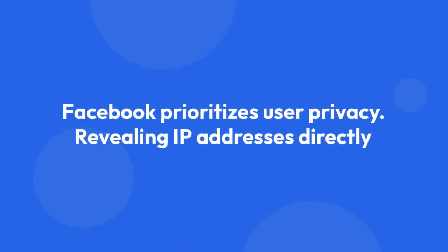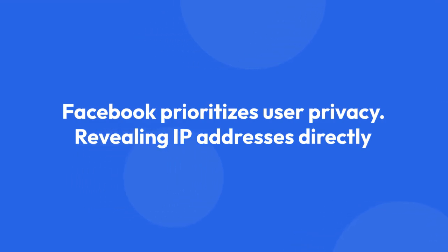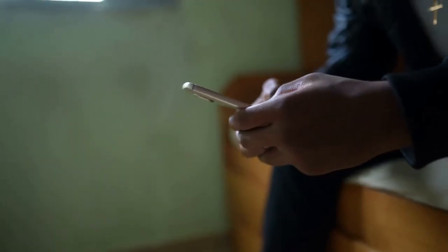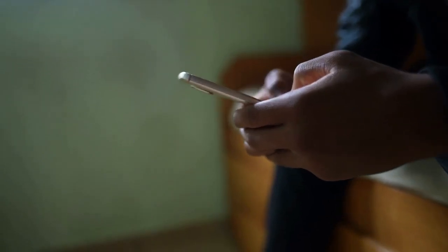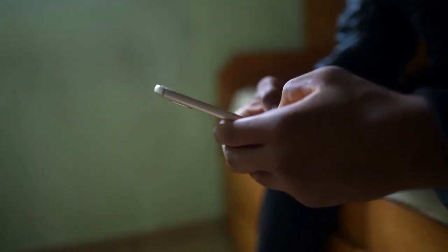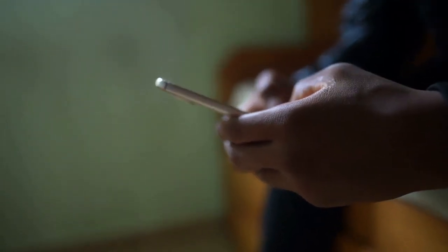Facebook prioritizes user privacy. Revealing IP addresses directly would be a massive security breach and a violation of their terms of service. They actively work to prevent unauthorized access to user data, including IP addresses.